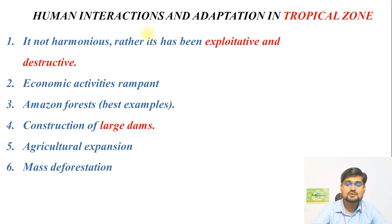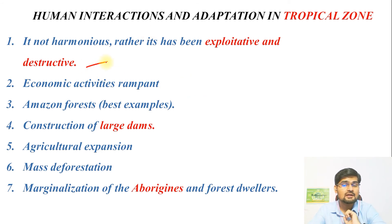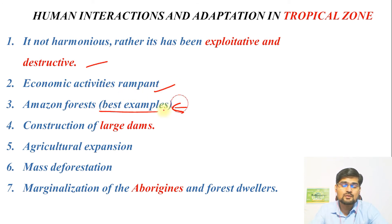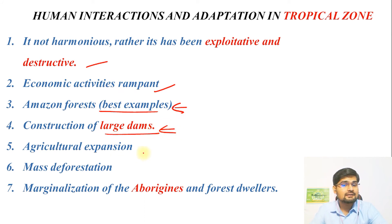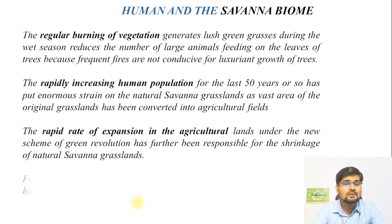Looking at case studies by zone: in the tropical zone, a non-harmonious and destructive relationship has existed for a long time. The tropical zone is rich in biodiversity — forest and animal species both — and we are exploiting and destroying it. The Amazon forest is the best example, with construction of large dams, agricultural expansion, mass deforestation, and marginalization of forest-dwelling communities all occurring.